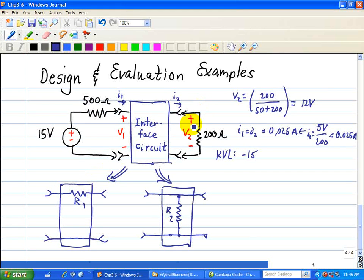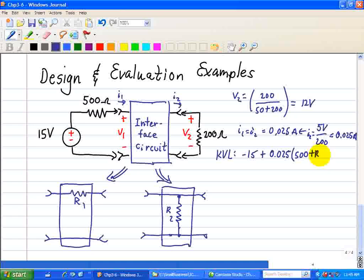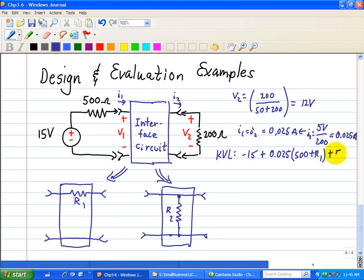But we know that the voltage drop across the 200 ohm is 5 volts. Therefore, we have I1 equals I2, so we have 0.025 times 500 plus R1 plus 5 equals 0.